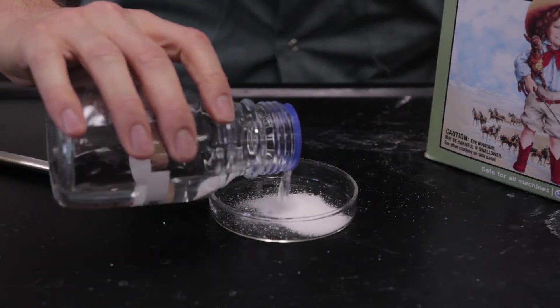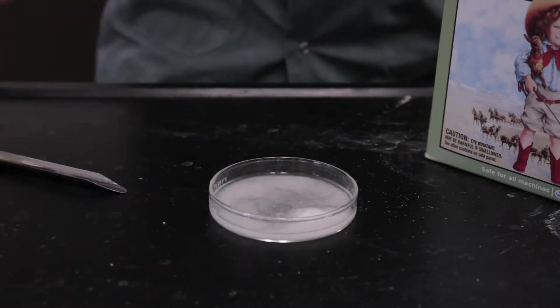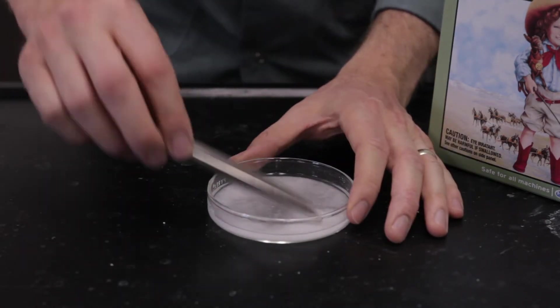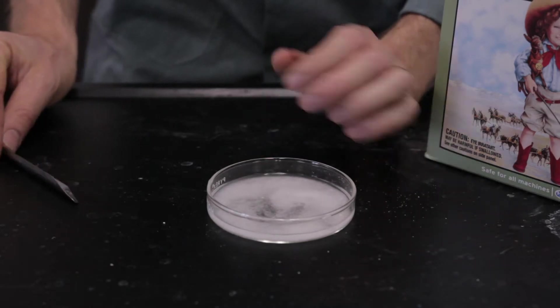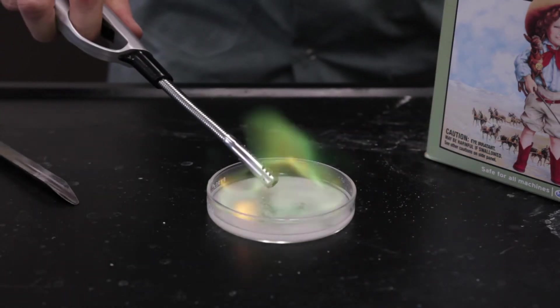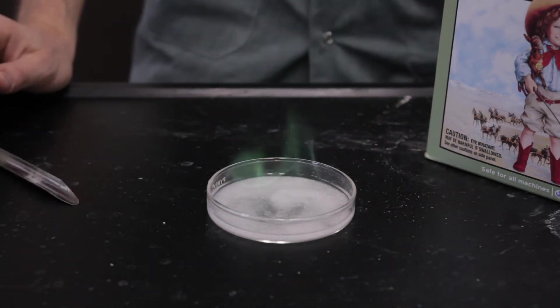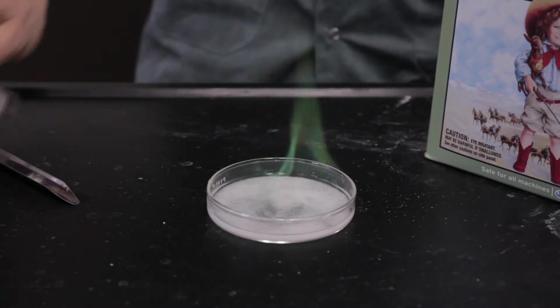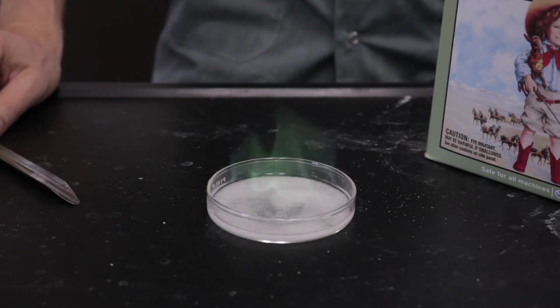However, the sodium that's in there will also burn with an orange flame, so you'll have a mix of the green and the orange flame. Let's check it out. So you have the green, but there's some spikes of orange here and there whenever the sodium is burning.